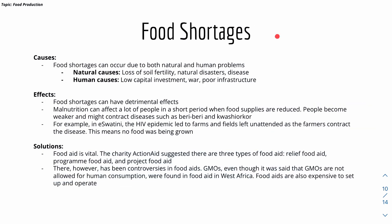Food shortages can occur due to natural and human causes. Natural causes include loss of soil fertility, natural disasters, and disease. Human causes include low capital investment, war, and poor infrastructure. The effects of food shortages include malnutrition, affecting many people when food supplies are reduced. People become weaker and may contract diseases such as beriberi. In East Eswatini, the HIV epidemic left farms unattended as farmers contracted diseases, causing food shortages and malnutrition.